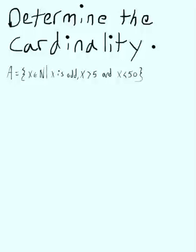So here we have a set A where we're taking things from the natural numbers. The number has to be odd, has to be greater than 5, and has to be less than 50. So you may want to pause the video and take a moment to try to write out what that set is.